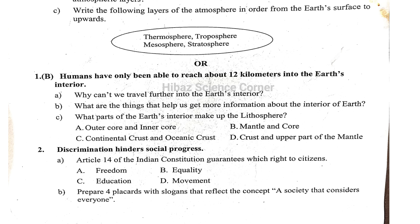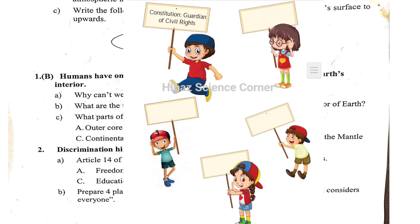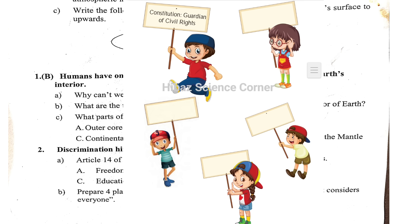Discrimination hinders social progress. Article 40 of the Indian Constitution guarantees the right to Equality to citizens. Prepare a placard with a slogan that reflects the concept: a society that considers everyone equal. Slogans include Equality, Freedom, Fraternity, and Justice to all.